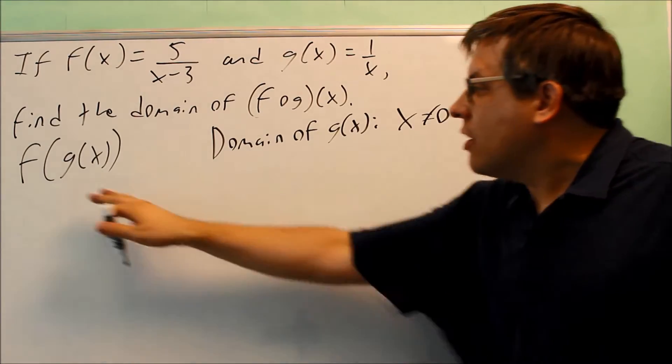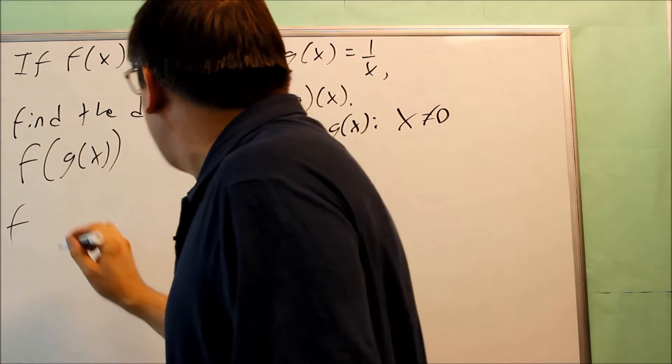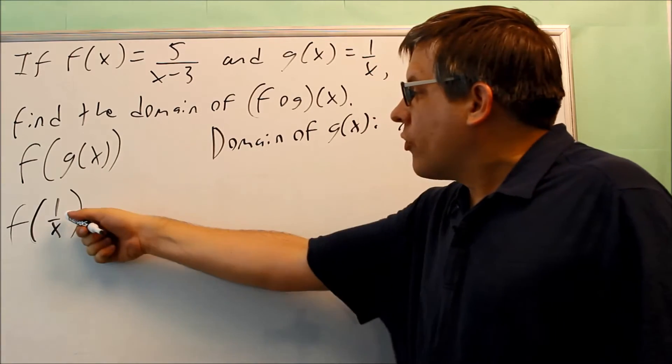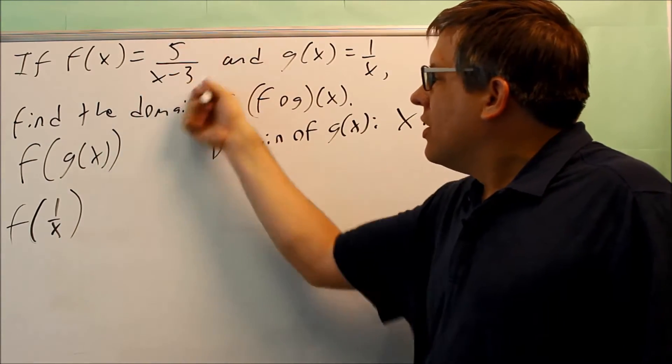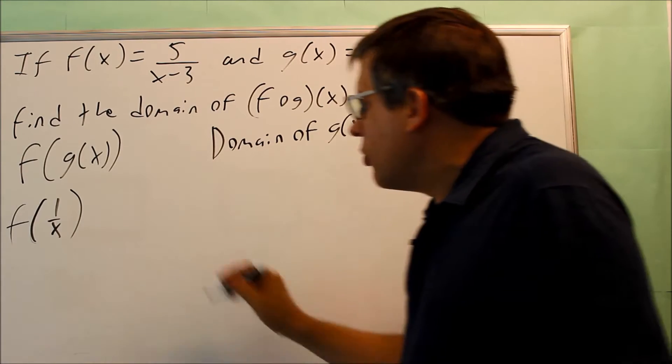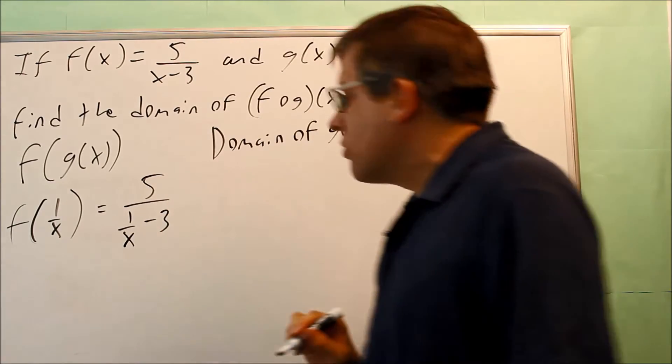Second, you want to find the domain of the whole thing. So let's do that now. We're going to do f of g of x, which is 1 over x. So now I want to put 1 over x into this expression here, putting it into the f formula. So it's going to look like that: 5 over 1 over x minus 3.